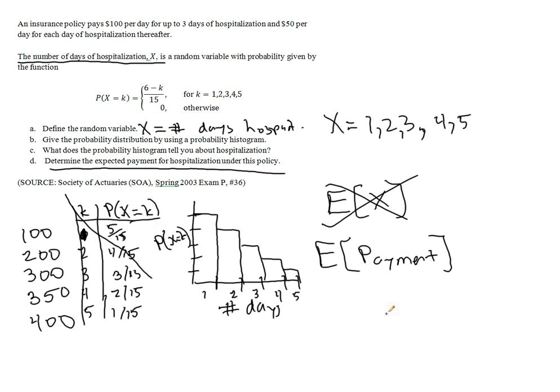So that means that the expected payoff or the expected payment will be 100 times its probability plus 200 times the probability that that happens plus 300 times its probability and so on. But I'm just going to go ahead and jump to the calculator here.